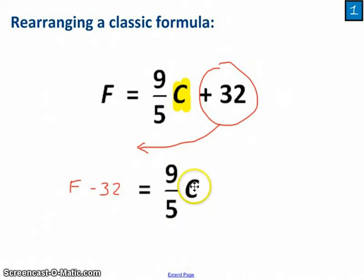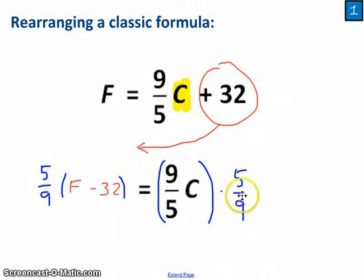Now you can, if you want from this point, divide by 9-fifths. I would encourage you instead to multiply by the reciprocal. Dividing by 9-fifths can be a pain, but if you multiply times 5-ninths, those are going to cancel and I'm going to end up with 5-ninths times the expression I'd had a second before, Fahrenheit minus 32. Cleaning this up, that's my formula.